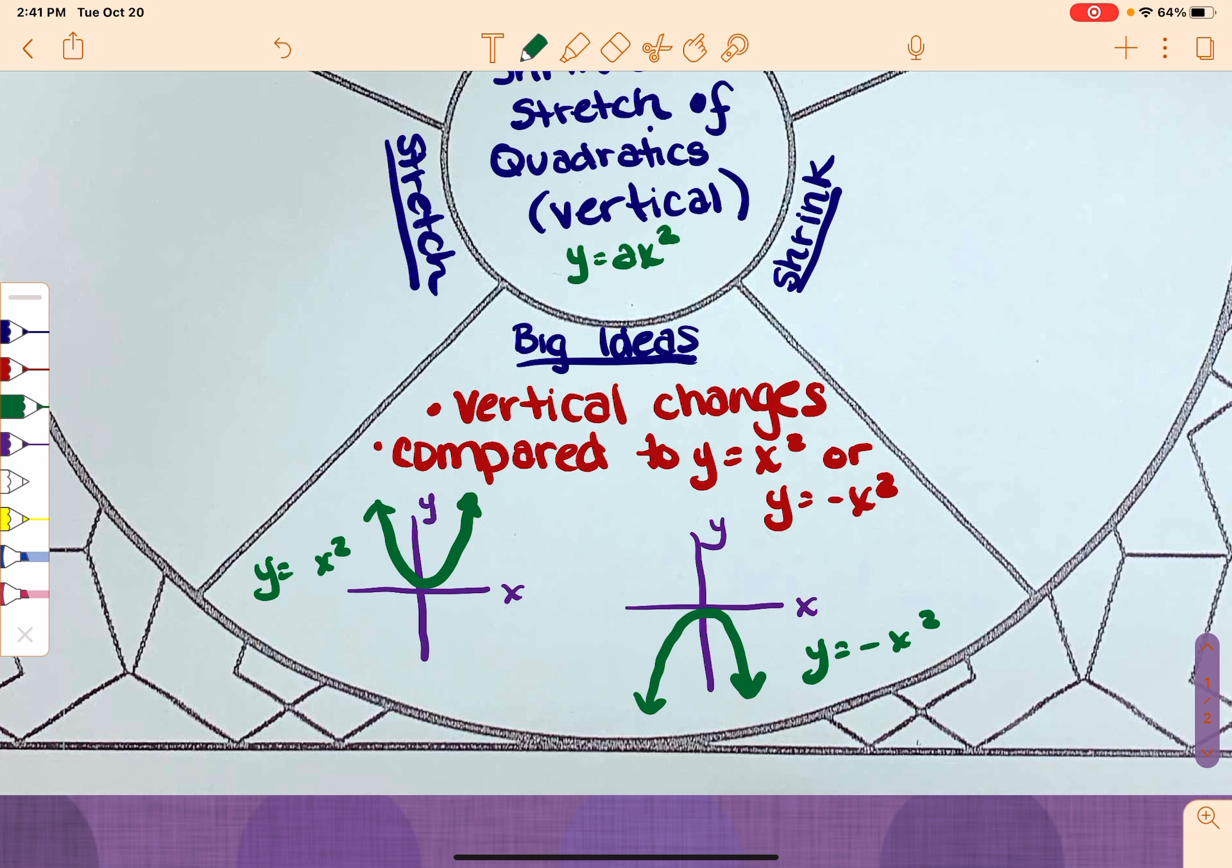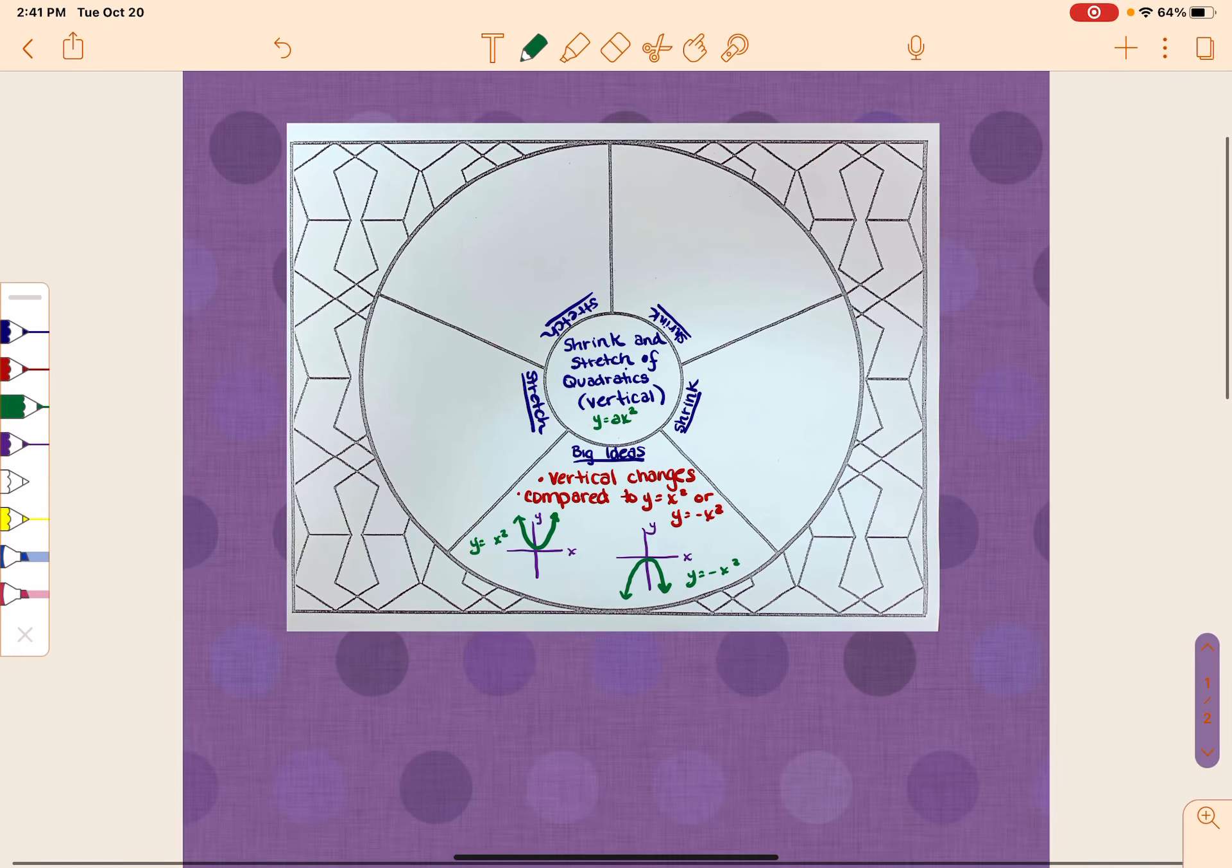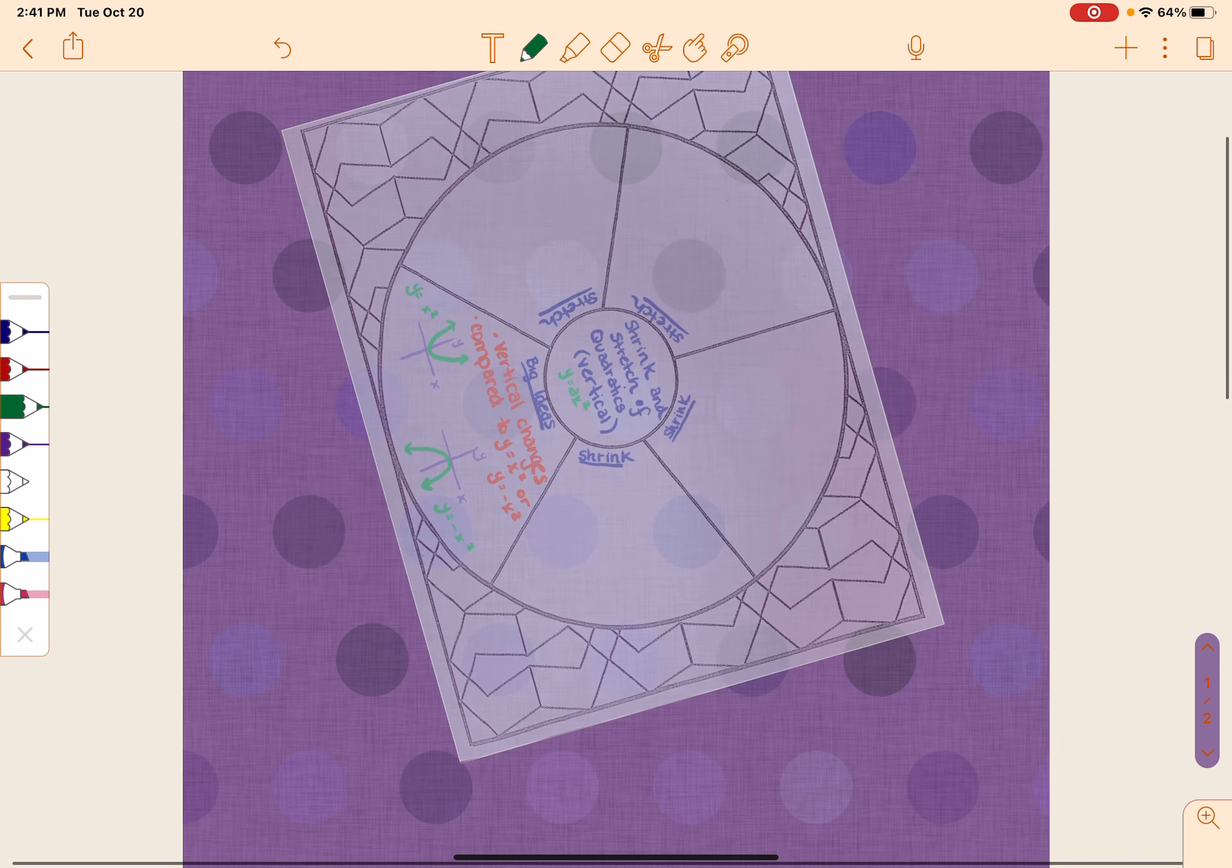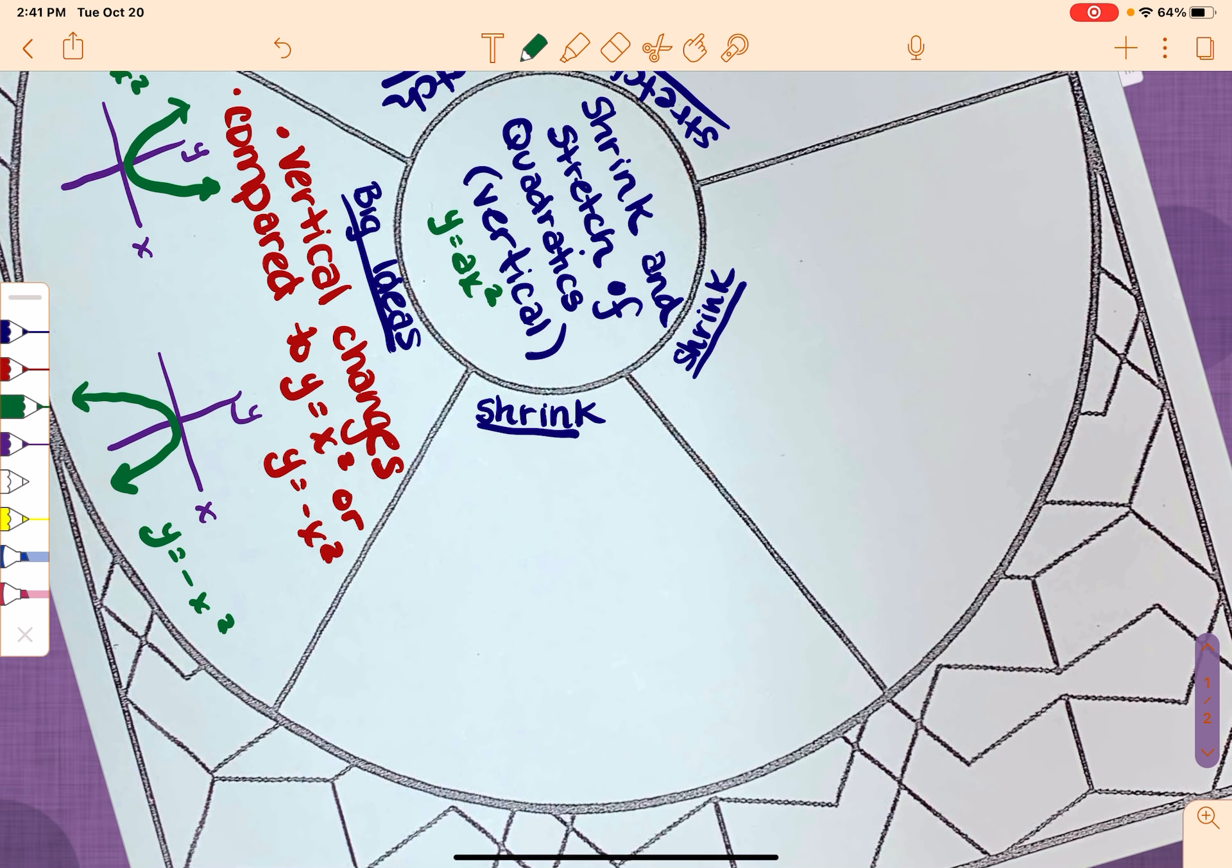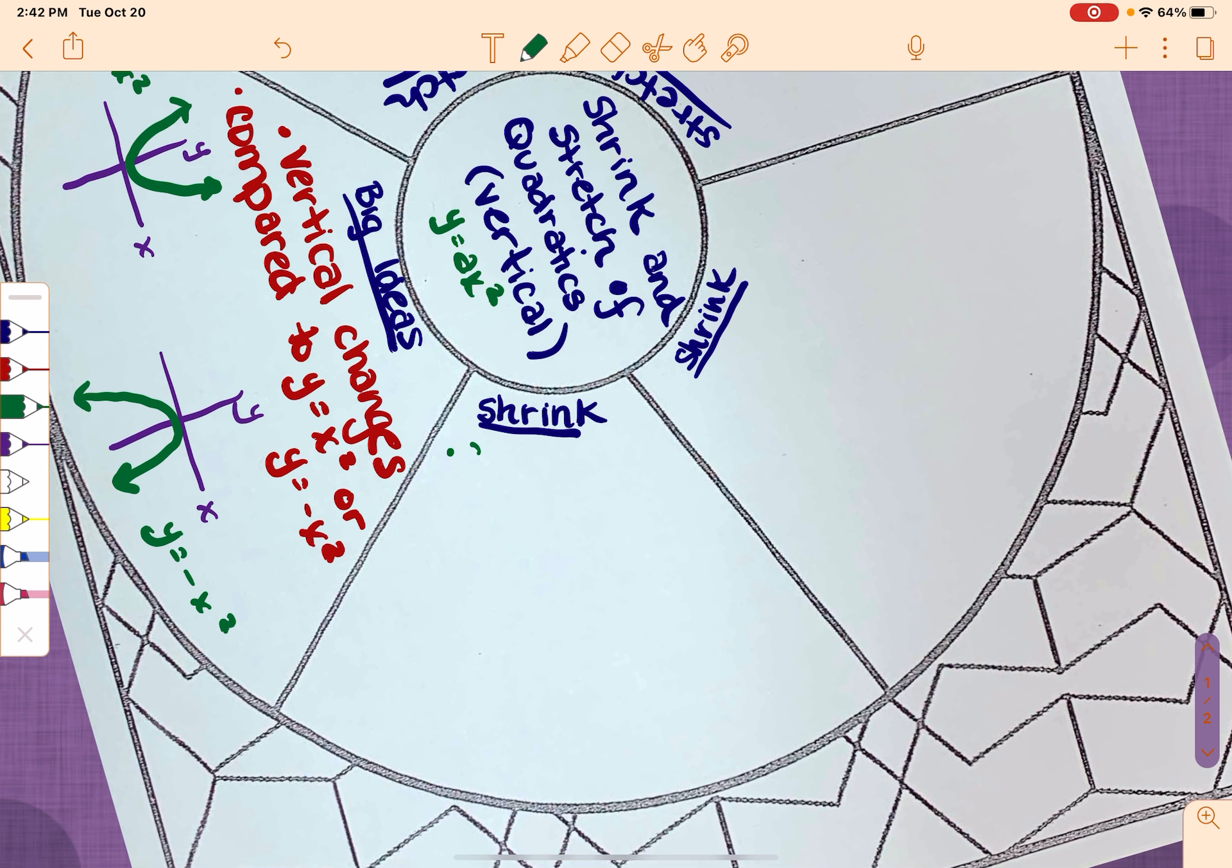So let's talk about this idea of shrink and what that means. Just turn my organizer here. Okay, so first of all, we are going to be talking about general form. And as we do, we're going to talk about the a value. So if it's a shrink, then the absolute value of whatever a is has to be between 0 and 1.